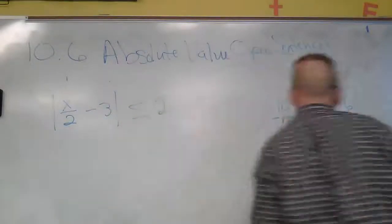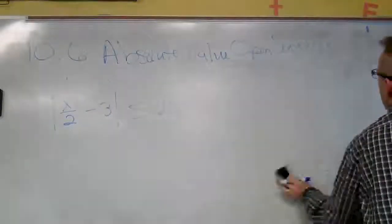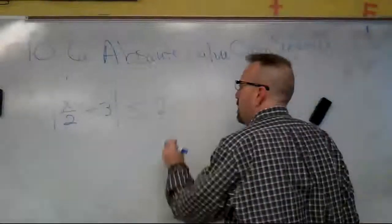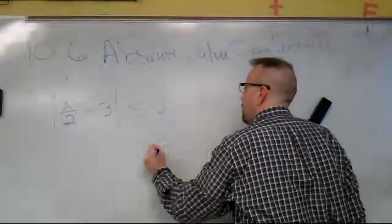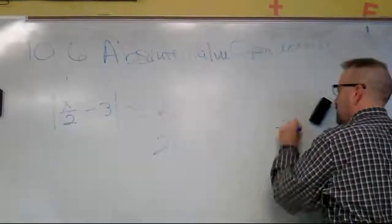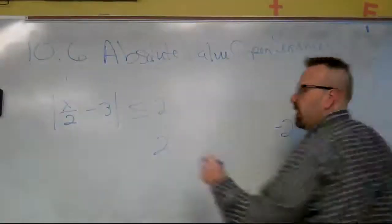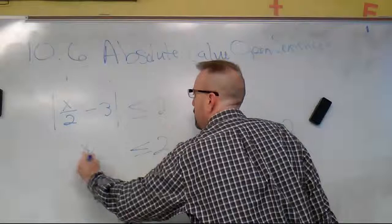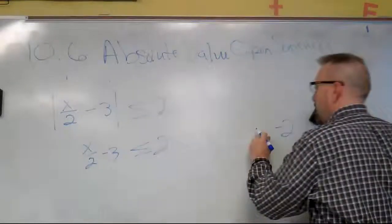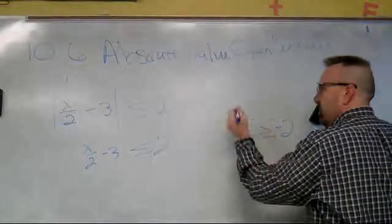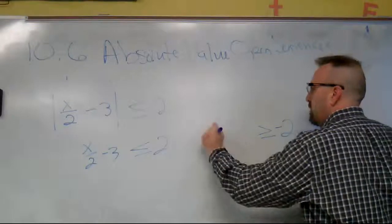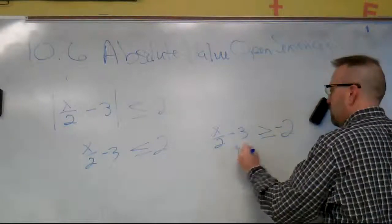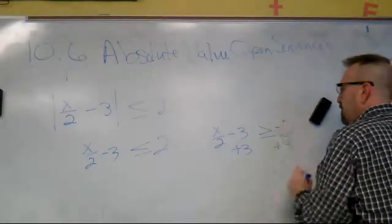All right, we have the absolute value of x divided by 2 minus 3, less than or equal to 2. So the absolute value of 2 gives us 2, but negative 2 is also 2 units away. For the positive, remember, keep the sign exactly as it appears. For the negative, we're going to flip the sign so it becomes greater than. We now have x over 2 minus 3. We can start on this one: 3 minus 2 gets us 1.